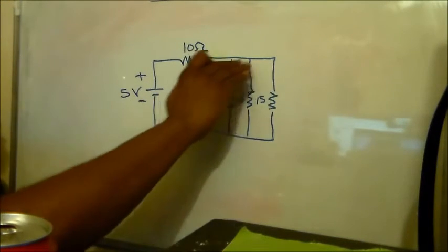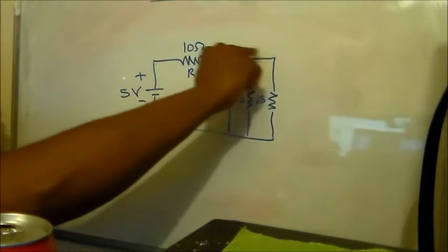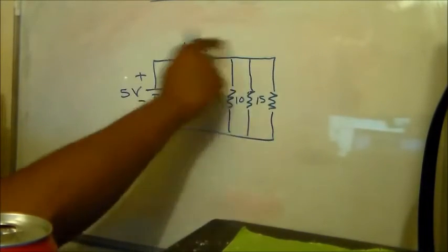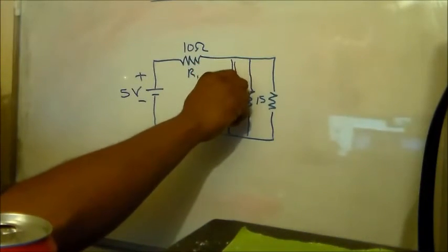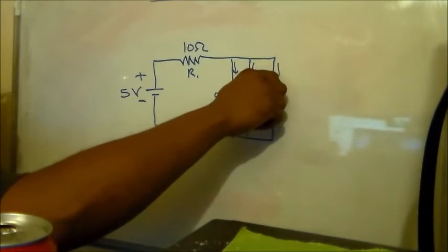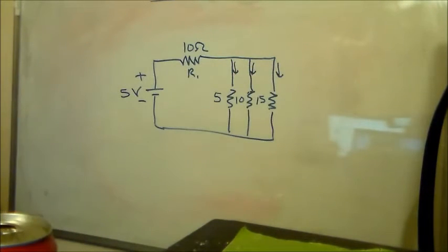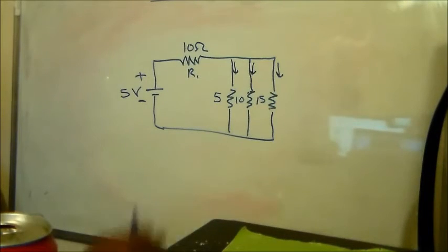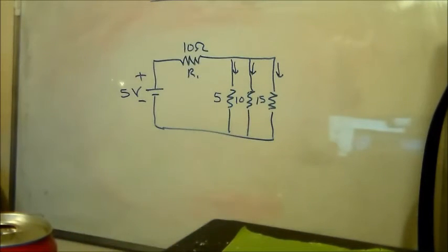Now, if these branches weren't here, it would just be series. There would only be one path for electricity. But since we have three different paths to branch off, this is a parallel. We have three parallel legs or circuits. It's kind of like circuits breaking off inside of a circuit.